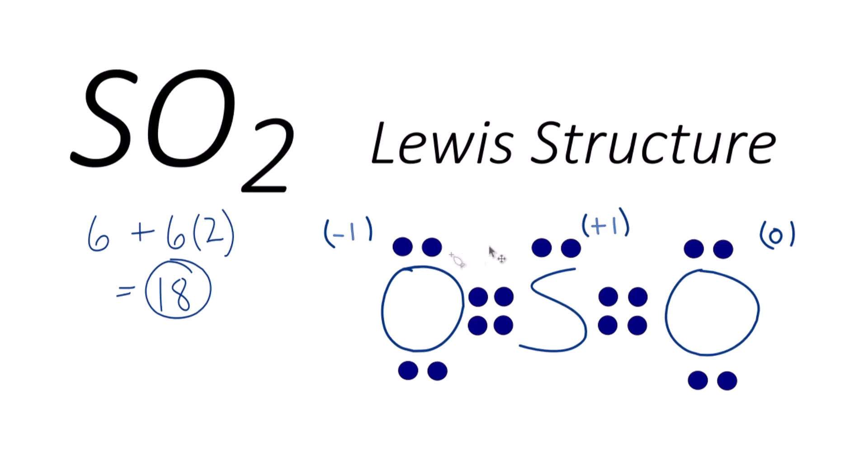So when we do that, our formal charges become, we have our double bond oxygen, that's zero. And then sulfur here, if you calculate that out, it's zero as well. So we end up with formal charges all of zero. So this is actually the best or most favorable or likely Lewis structure for SO2, sulfur dioxide.